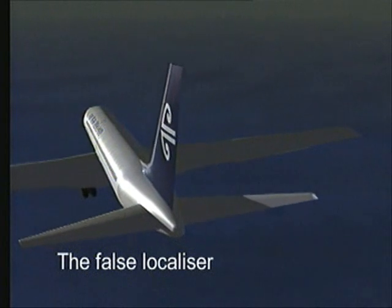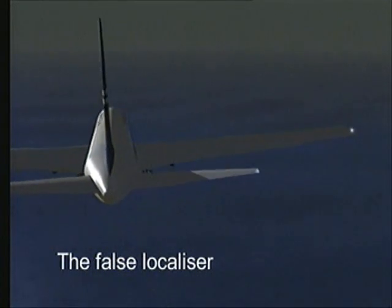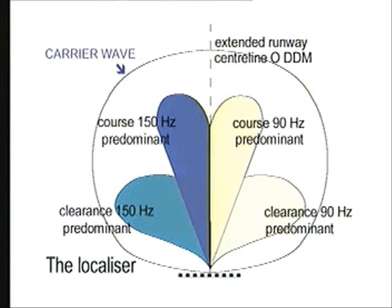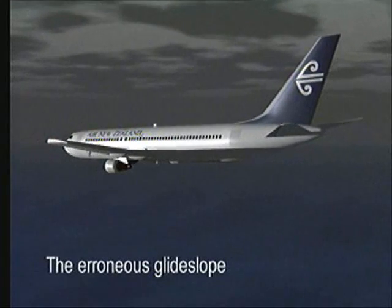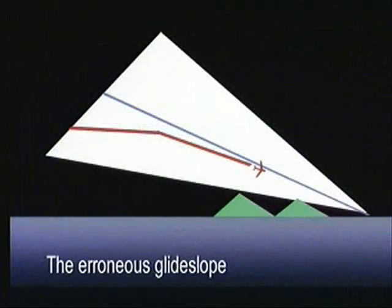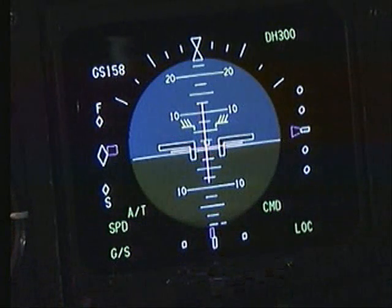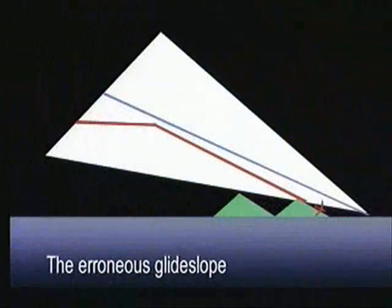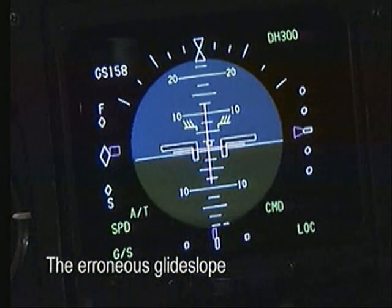A false localiser is caused by similar phenomena to the false glide slope, but in a lateral path. Remember, these false paths exist as a normal by-product of correct and valid ILS transmissions. The erroneous glide slope will show that you are on slope regardless of your approach slope or where you intercepted it. You will have no flags, have an on-slope indication, and a normal ident.